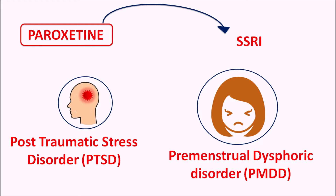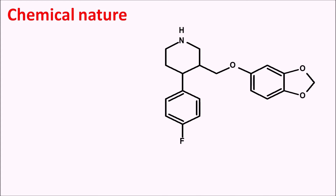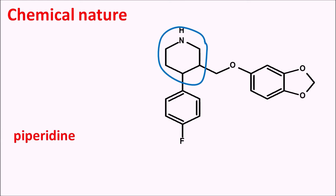Today in this video we are going to see how this drug acts, what is its chemical nature, what are the important precautions, side effects, and doses. First, the chemical nature of this drug: this is the structure of paroxetine, and here we can identify one heterocyclic ring system — the piperidine.